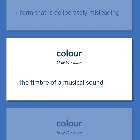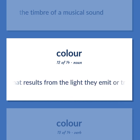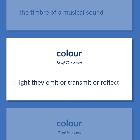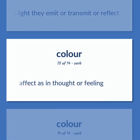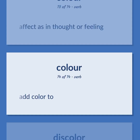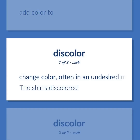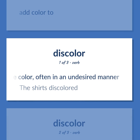An outward or token appearance or form that is deliberately misleading. The timbre of a musical sound. A visual attribute of things that results from the light they emit or transmit or reflect. Effect as in thought or feeling. Add color to. Change color, often in an undesired manner — the shirts discolored.